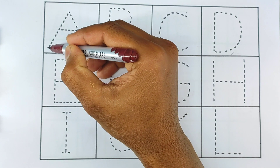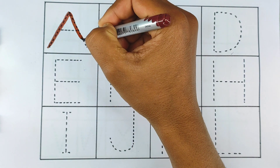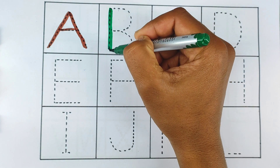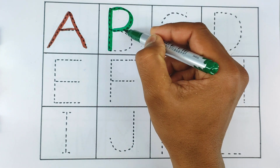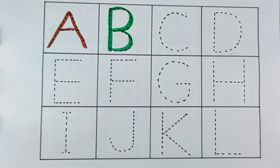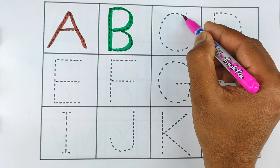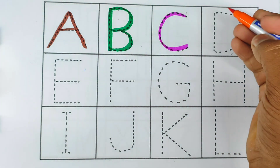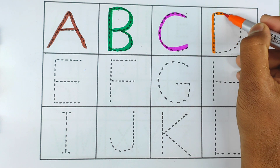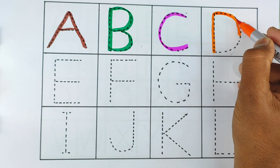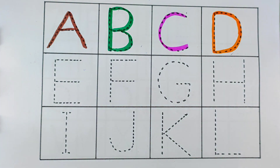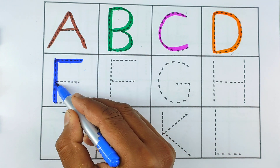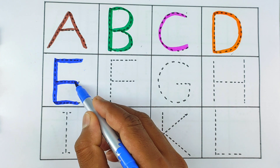A, A for apple. B, B for ball. C, C for cat. D, D for dog. E, E for elephant.